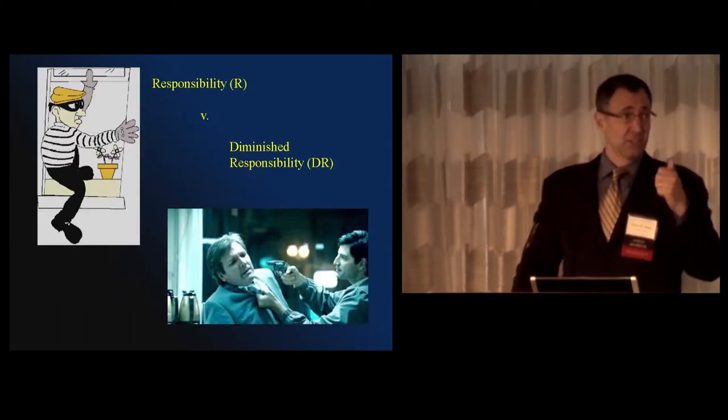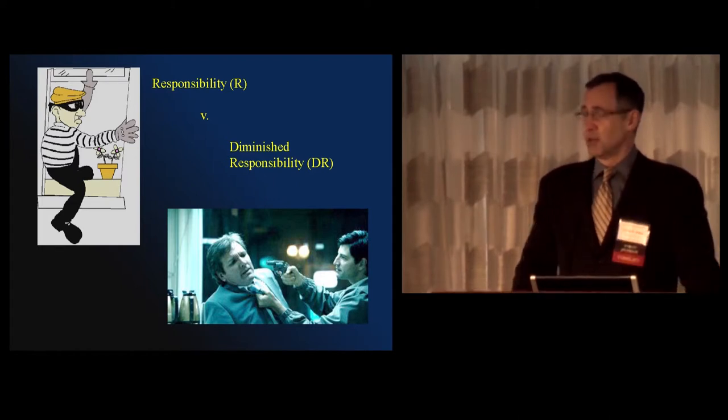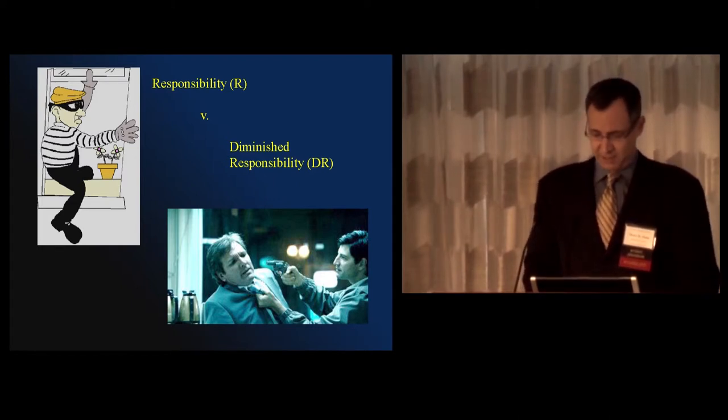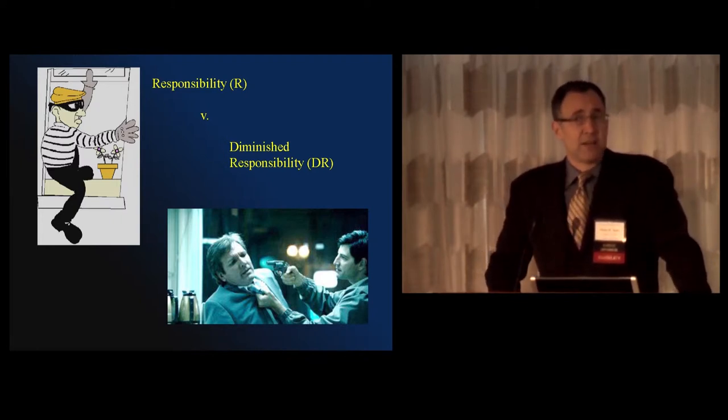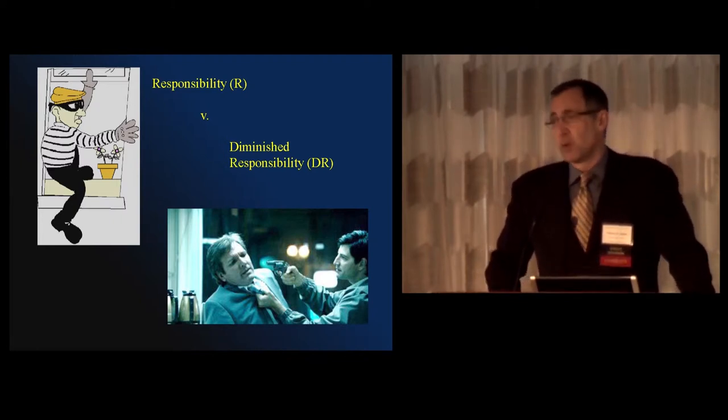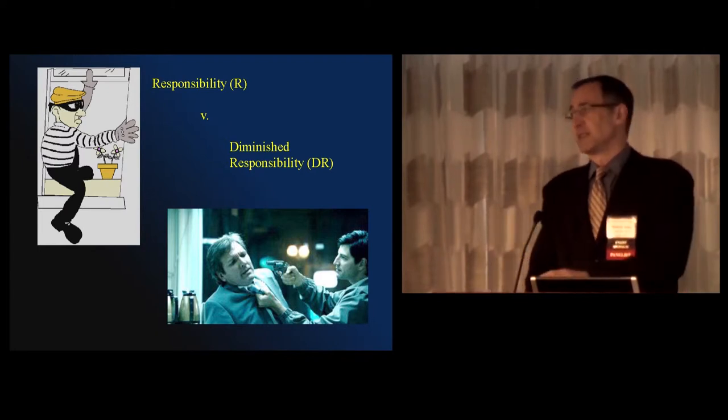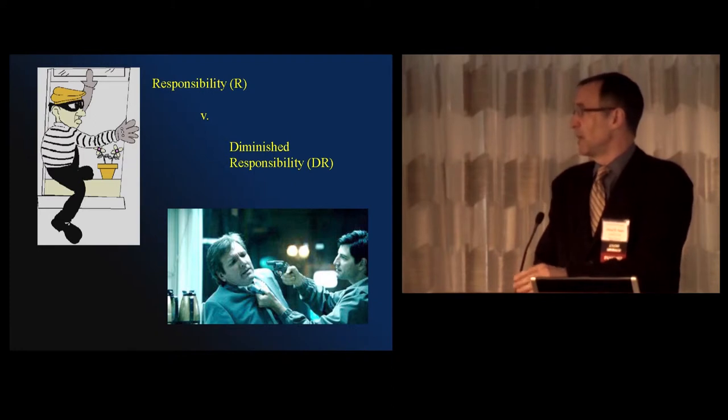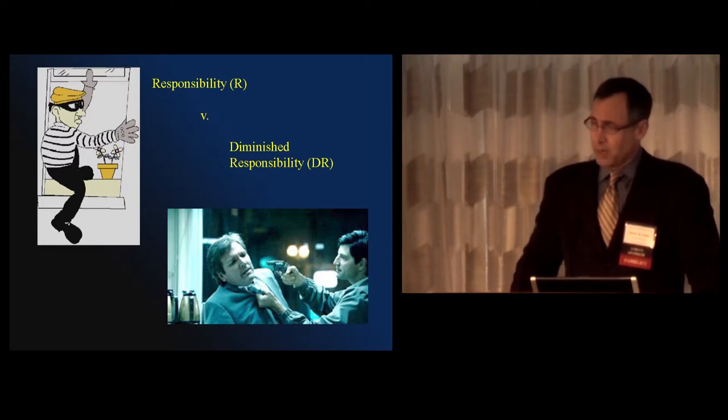Okay, so responsibility condition. John is a bad guy. He does a bad thing for a bad reason. Okay, so your upper left here is your classic sort of criminal. Diminished responsibility. John robs a house, but he does so because a drug dealer puts a gun in his face and says, if you don't rob this house, I'm going to shoot you. We might still hold such a fellow responsible, but not in the same way as the first fellow. So here are three scenarios.